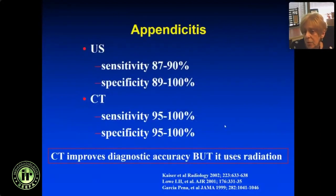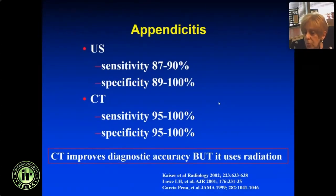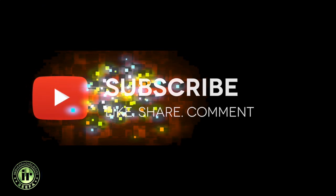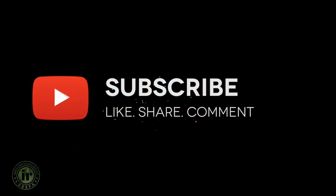Overall, ultrasound in the best of hands has sensitivity between 87 and 90% and specificity up to 100%. CT is more sensitive and specific, but it's not the first study of choice because of the radiation risk. Ultrasound is the first study of choice.